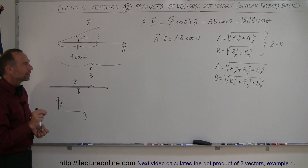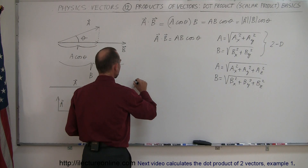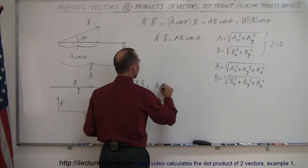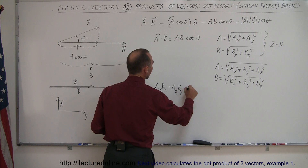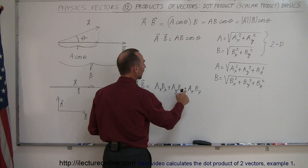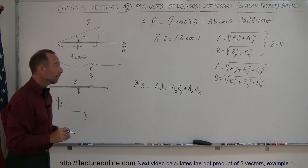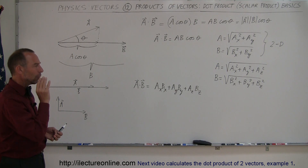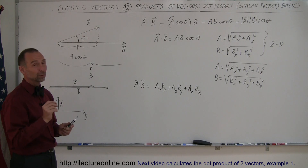There's one more way to find the dot product of two vectors. It turns out that A dot B can also be found as the product of the x-components plus the product of the y-components plus the product of the z-components: Ax times Bx, plus Ay times By, plus Az times Bz. These are the magnitudes of those components, not vectors. Also keep in mind that if they're pointing in a negative direction, you do have to take the negative into account.